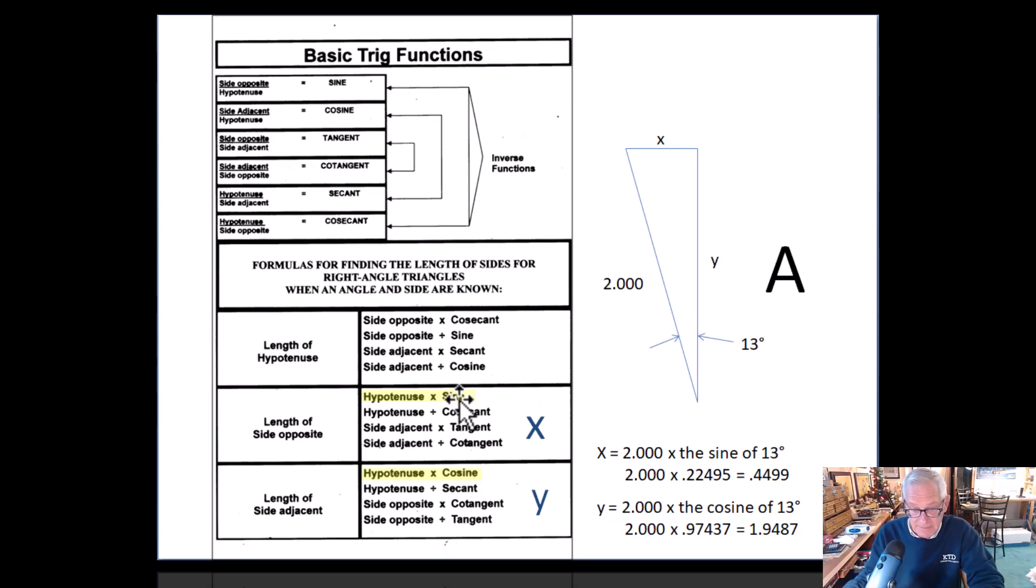In this case I'm going to use hypotenuse times sine: two inches times sine of 13 degrees. So there it is spelled out: two inches times sine of 13 degrees, which is 0.22495, equals 0.4499. Now we know how much to move over on our X from the centerline of our part to drill our hole, drill and ream it.